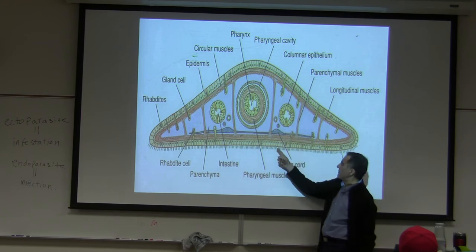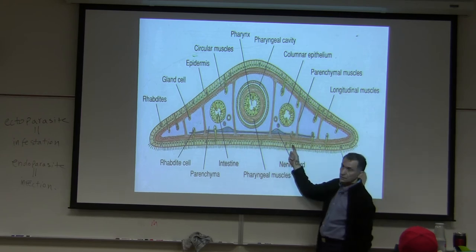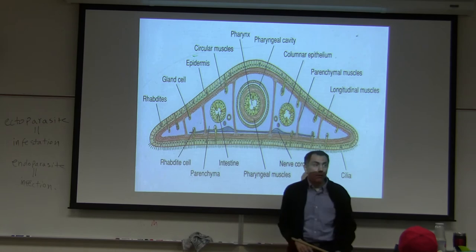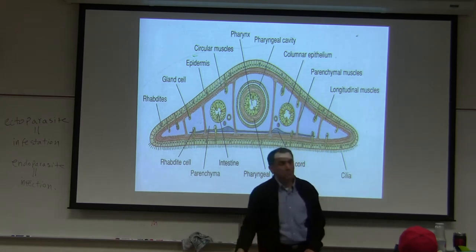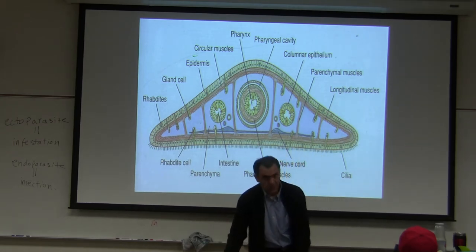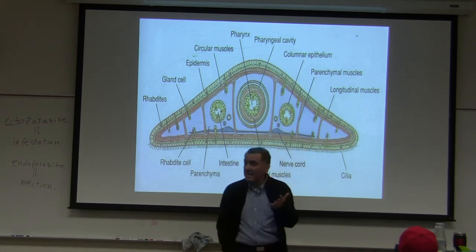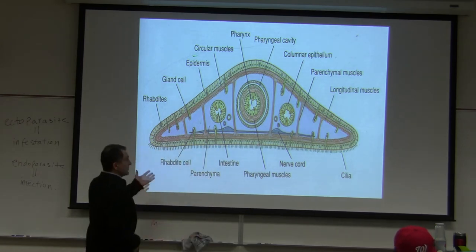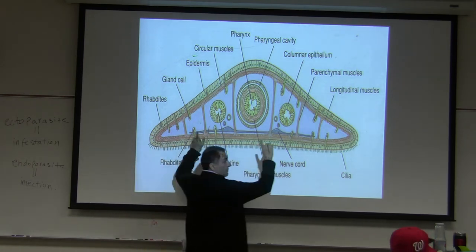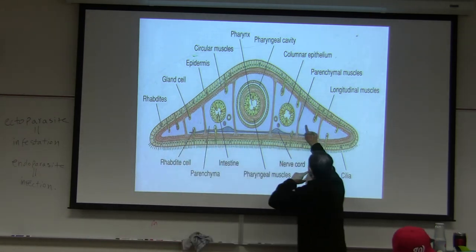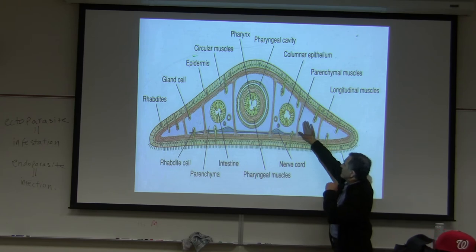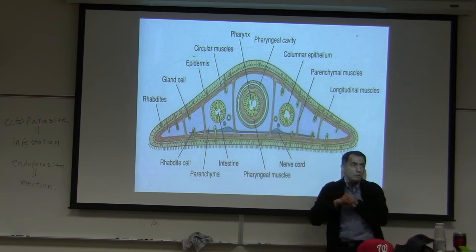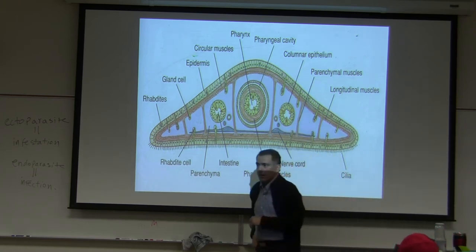Am I making some sense? Epidermis. Everything in between came from mesodermis — mesodermis, which is the parenchyma layer. So I hope parenchyma cells — you remember: any cells which came from mesodermis found in this area are called parenchyma cells.